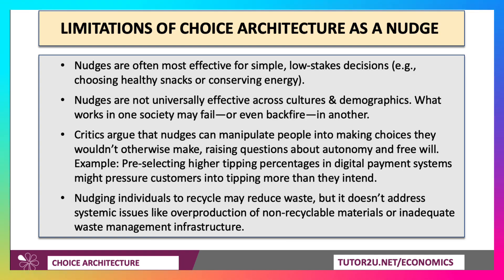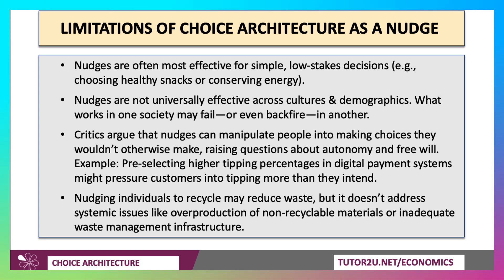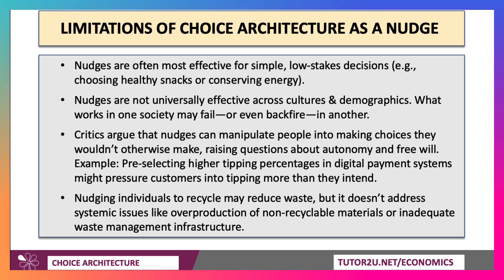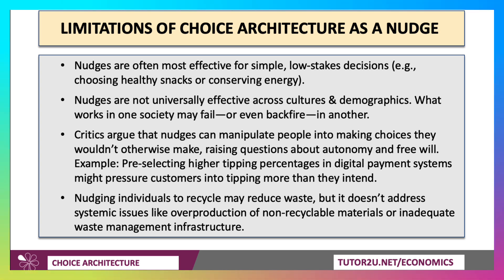It's important to evaluate choice architecture — there are limitations. This is particularly true as a form of nudging. Nudges are often most effective for fairly simple, low-stakes decisions — whether you choose the salad or the dessert at a buffet, or how to conserve energy. These are fairly low-stakes decisions we often make quite frequently. They're not necessarily universally effective across cultures and demographics. The choice architecture that might work in one society might be ineffective or even backfire in another. Critics have also argued that nudging can be a way of manipulating people into making a choice they wouldn't otherwise make — so this idea of libertarian paternalism, autonomy and free will, is open to question.